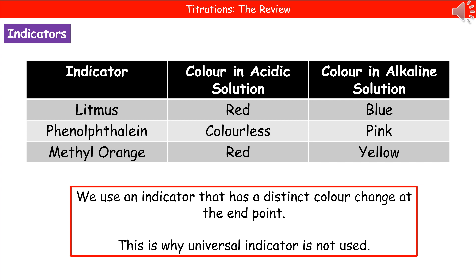We wouldn't use something like universal indicator because, as you can remember from doing these experiments where you're sitting there with that card trying to work out just what shade of green it actually is, it's not easy to identify when a certain pH is reached. So because of that we don't use universal indicator — we would always use one of the single indicators.